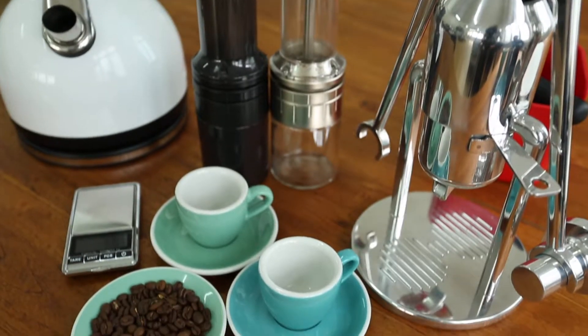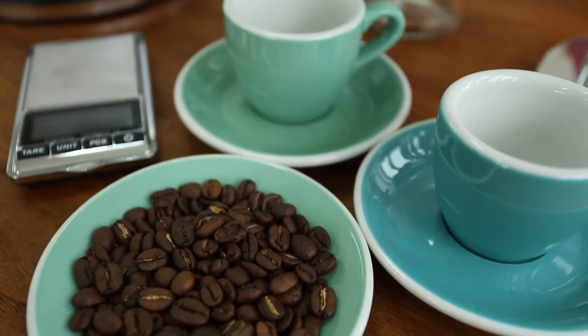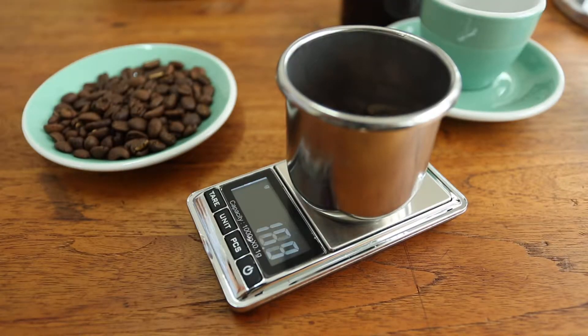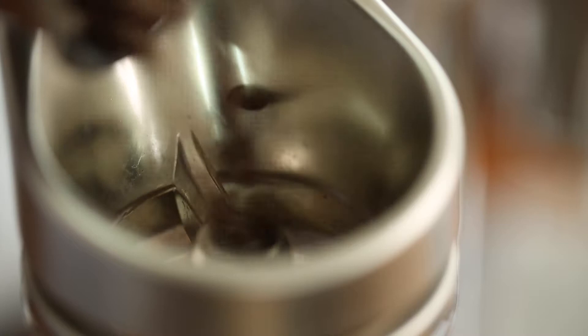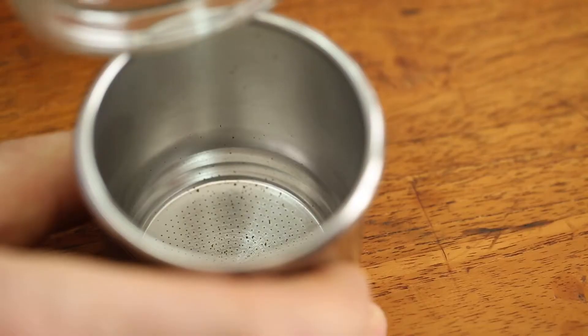So let's make some coffee and show you how easy it is. Measure out your coffee beans—here we are using 17 grams. Grind them on an espresso setting using a hand grinder or an electronic grinder.